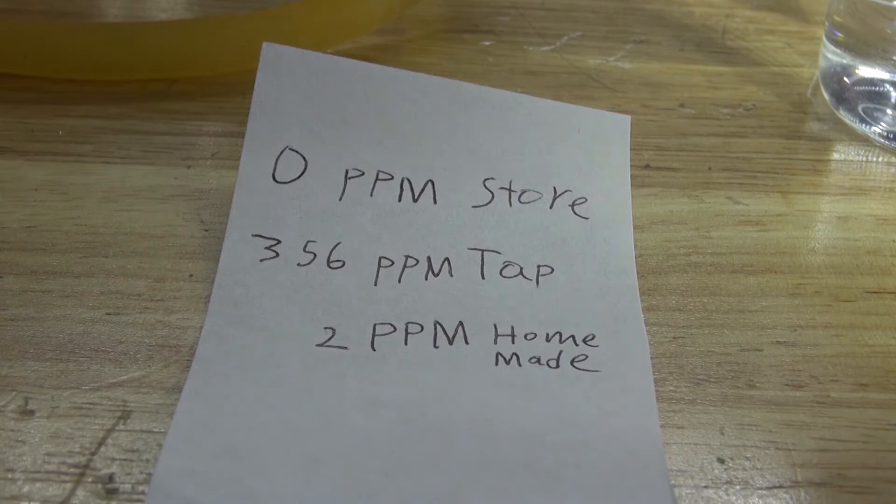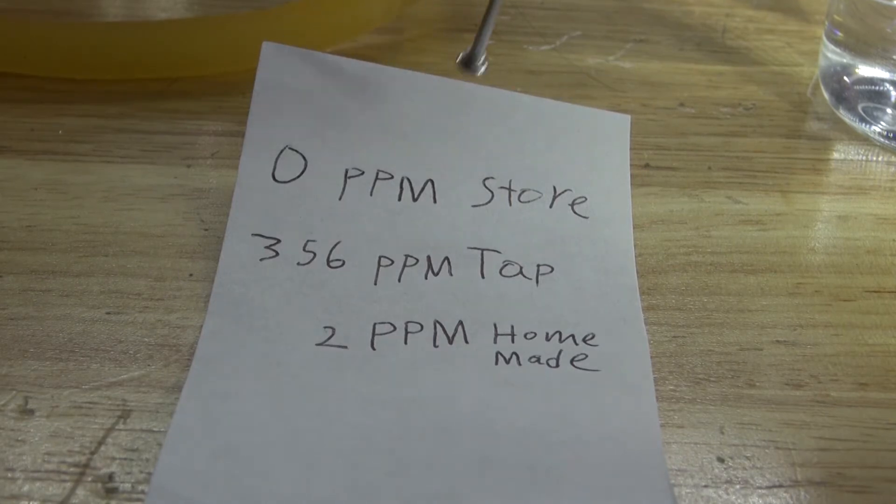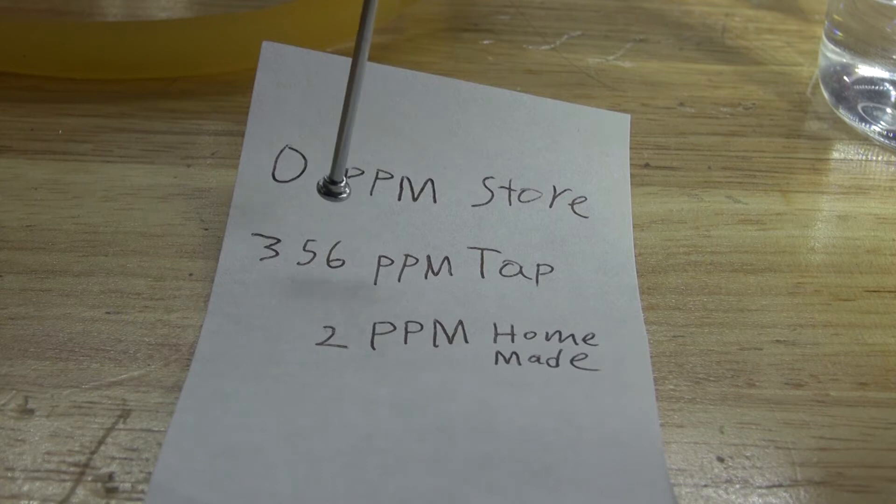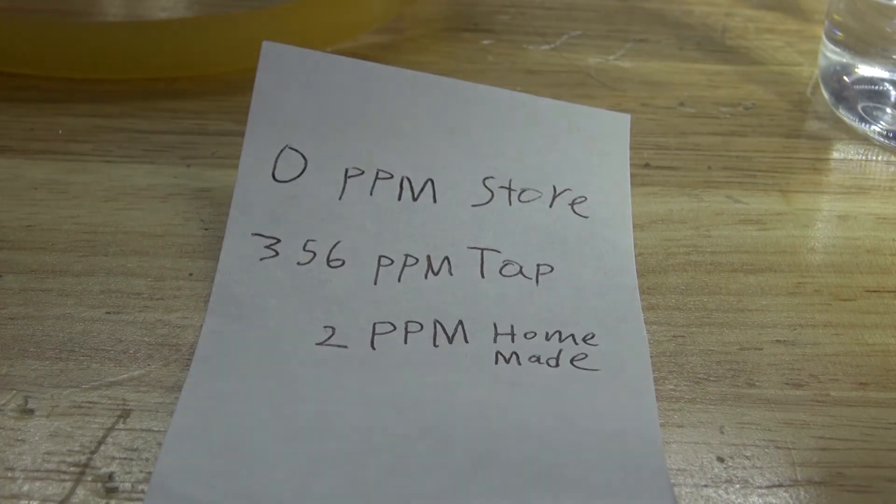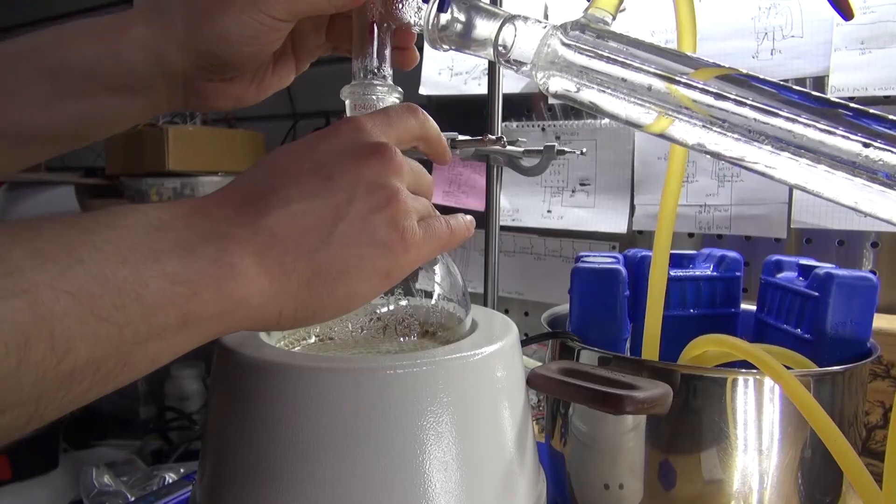As you can see, I have a chart right here. 0 parts per million is the store brand, which is the control. 356 parts per million is my tap water. And now my homemade distilled water is 2 parts per million. That's what my results are after doing one round.